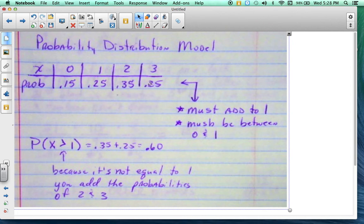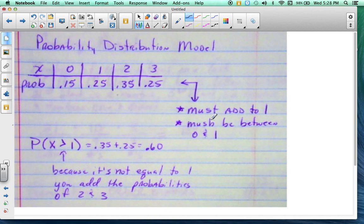Probability distribution model. Remember, it must add up to 1, and they must be between 0 and 1. I think that is a t. That must be a t right there. Must be between 0 and 1.